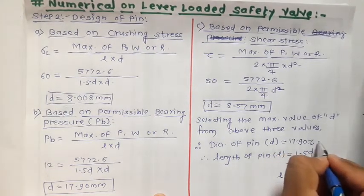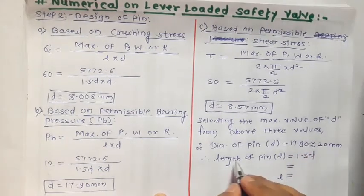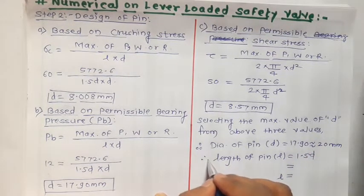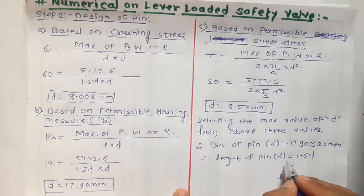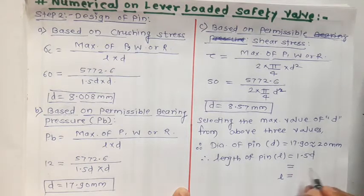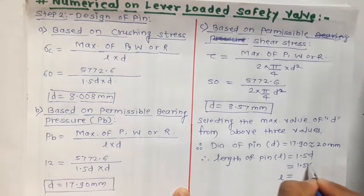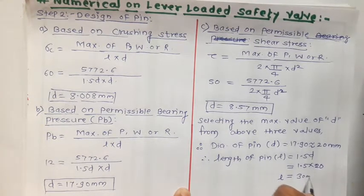We round up 17.90 mm to 20 mm. After selecting the maximum value of diameter of pin, we calculate the length of pin. Length of pin L = 1.5D, and substituting D = 20 mm gives L = 30 mm. So in step 2, the diameter of pin is 20 mm and the length of pin is 30 mm.